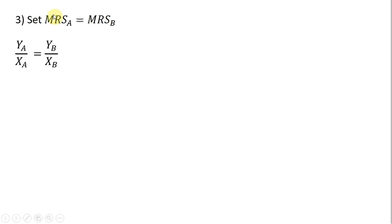Step 3: on the contract curve, the marginal rate of substitution for trader A will equal the marginal rate of substitution for trader B. In other words, the indifference curves of each trader will be tangent to one another. So setting MRS_A equal to MRS_B, we get this result.